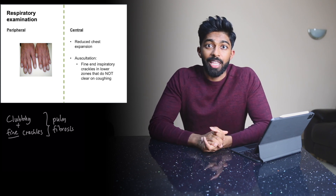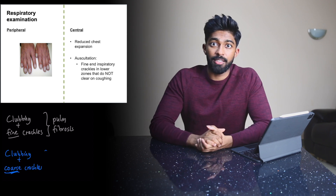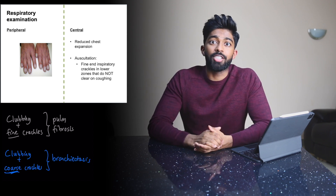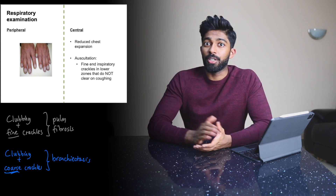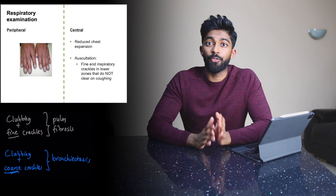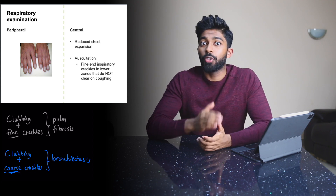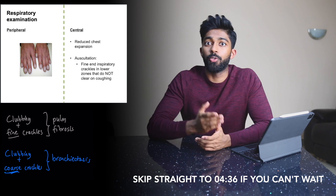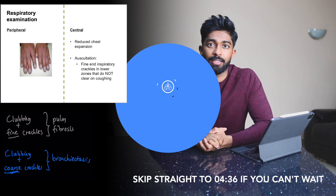Some of you will be aware that bronchiectasis, another common respiratory OSCE case, presents very similarly with clubbing, but this time with coarse crackles on auscultation. I was never able to confidently differentiate between fine and coarse crackles on auscultation, so I'll show you some tips later in the video as to clues that point towards pulmonary fibrosis and some that point more towards bronchiectasis.